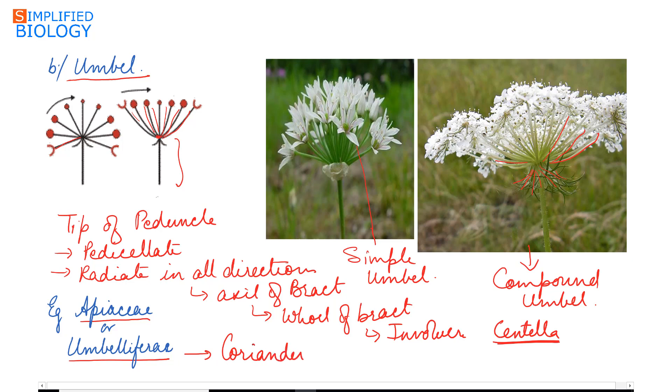Examples of umbel inflorescence are coriander, cumin, and Foeniculum (fennel).